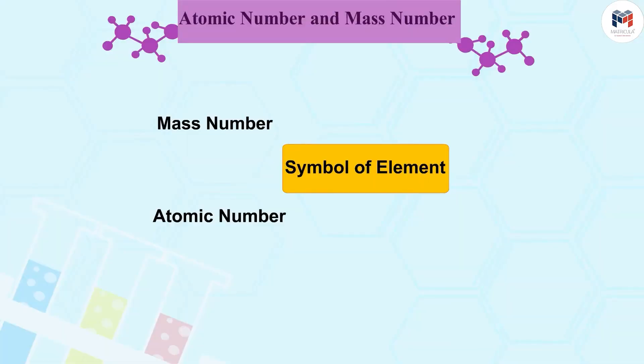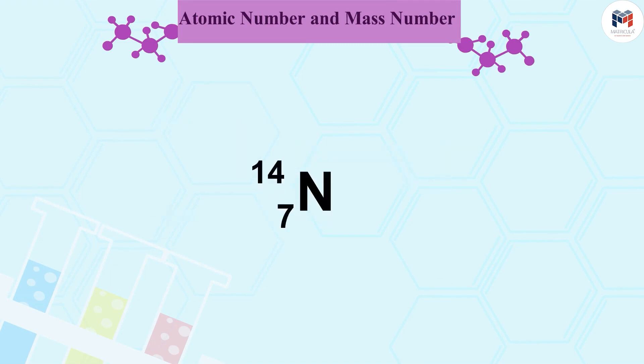In the notation for an atom, the atomic number, mass number and symbol of the element are to be written as follows. Such as nitrogen is written like this.